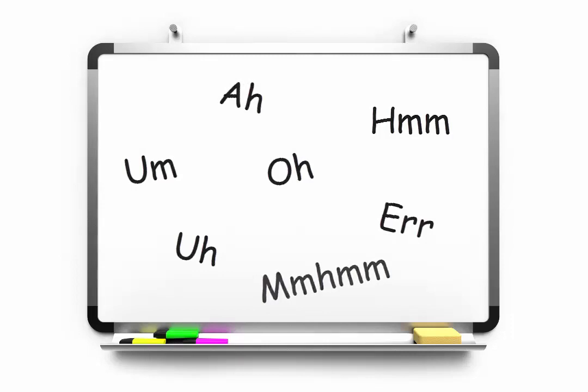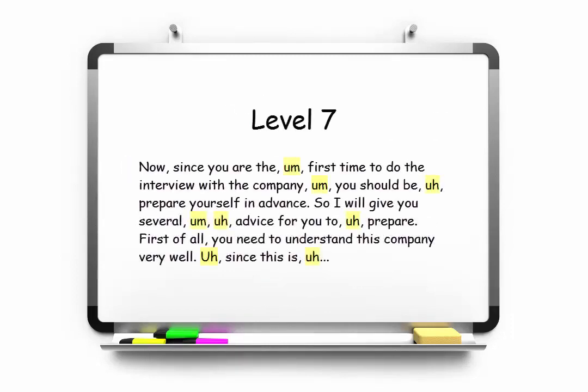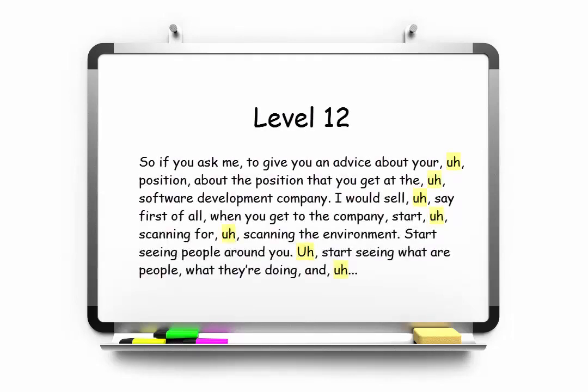Here's a snippet from the level 7 response. Do you notice all the times the speaker says um and uh? And here's the level 12 response. Notice that there are just as many interjections here as in the level 7 response.